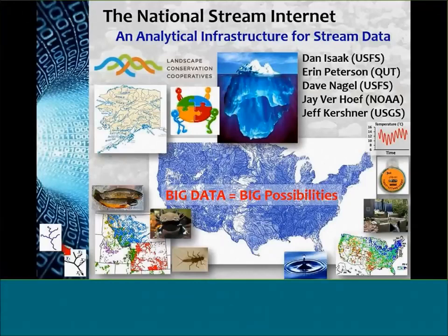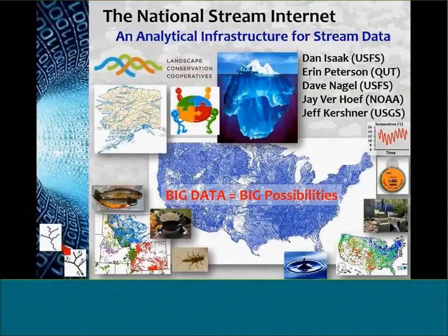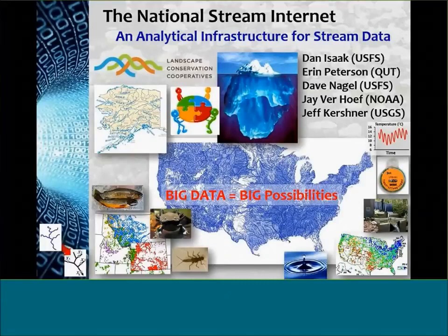The basic idea behind this is to try to create a generalizable and flexible analytical infrastructure that is specific to data measured on stream networks. I want to also acknowledge my co-authors: Aaron Peterson, a spatial stream ecologist with Queensland University of Technology in Australia; Dave Nagel, our geospatial analyst at the Boise Aquatic Sciences lab in Idaho; Jay Verhoef, a biometrician with NOAA's Marine Mammal Lab in Fairbanks, Alaska; and Jeff Kirshner, a fish biologist with USGS, recently retired.